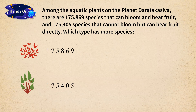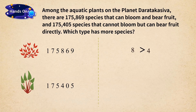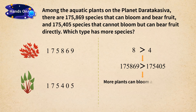We can use the same method as before. We first write the two numbers with their digits aligned in a column and then classify them. Since they have the same number of digits, we compare digit by digit from left to right. They have the same 100,000, 10,000, and 1,000 digits, but different 100 place values. The hundreds place of 175,869 is 8, and the hundreds place of 175,405 is 4. Since 8 is greater than 4, 175,869 is bigger than 175,405. So more plants can bloom and bear fruit.